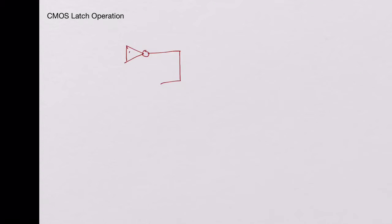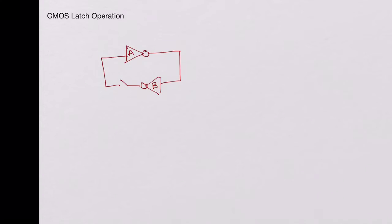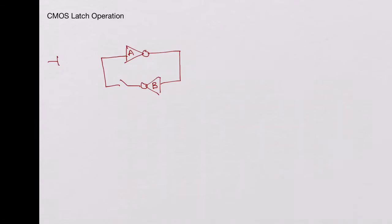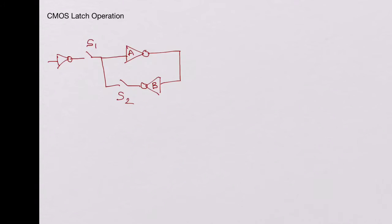We have inverter A, whose output is connected to the input of inverter B. I'll add a switch here and explain why the switch is added. The input comes in through another inverter, and we will have one more switch. We'll call the switches S1 and S2. This is the Q out of the latch and this is the D input of the latch.